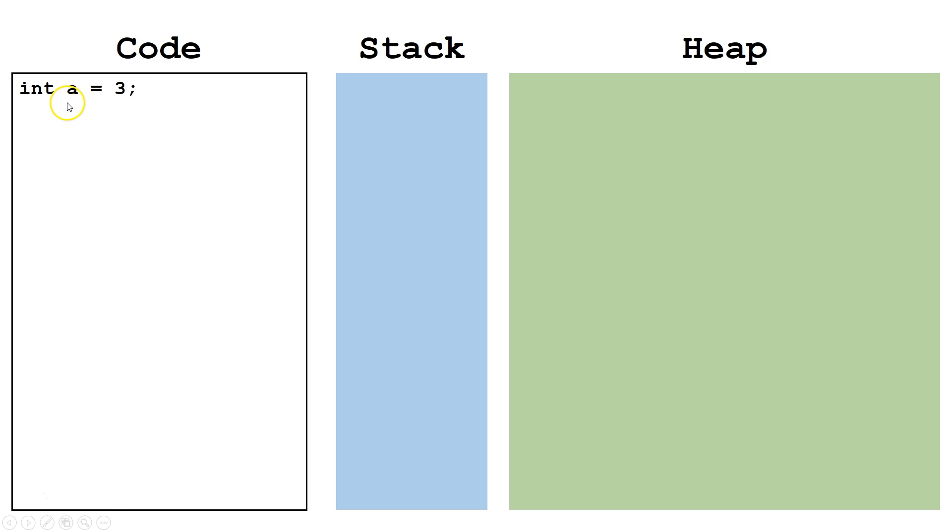Our first line of code, we declare a variable a of type int and set it equal to 3. Since a is a primitive type, all data is stored on the stack.